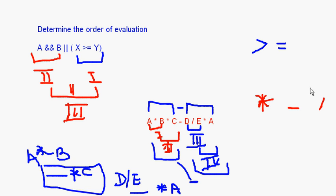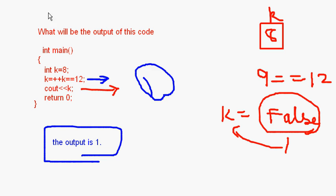We have seen examples pertaining to order of evaluation, which is very important in the context of operator precedence, covering arithmetic, relational, and logical operators. I also showed you one predict-the-output question. I hope you have understood everything covered in this session. With this, I come to the end of this session. Bye.